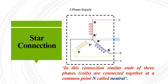First one is the star connection. In star connection the three windings or the three coils are connected in such a way that the similar ends are connected together. Looking into the figure, we can see that the similar ends of the coil in each phase — that is R', B', and Y' — are connected together to form a common point, and this common point is known as the neutral. The free ends, that is R, Y, and B, are connected to the load.